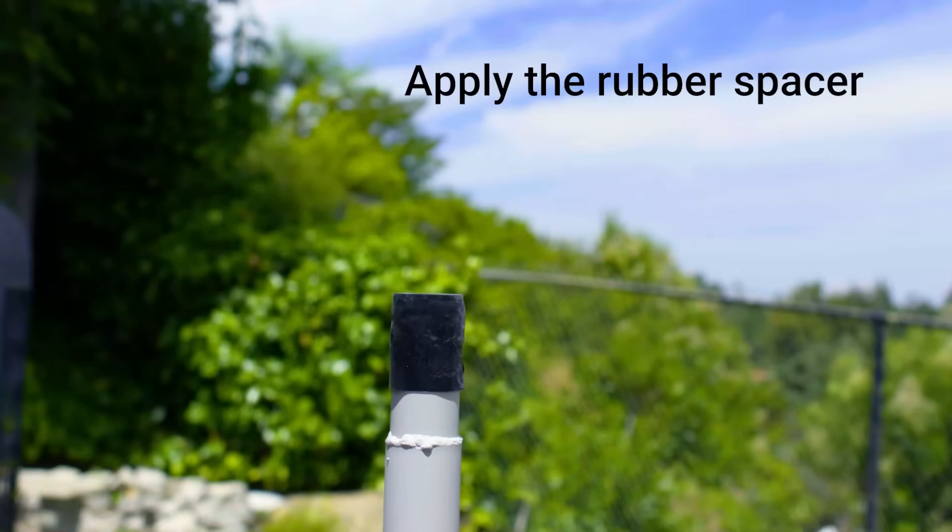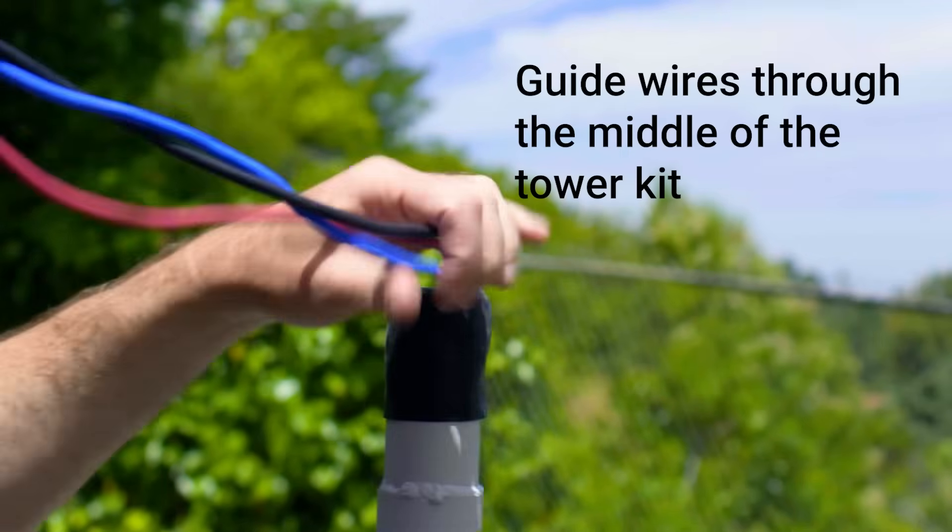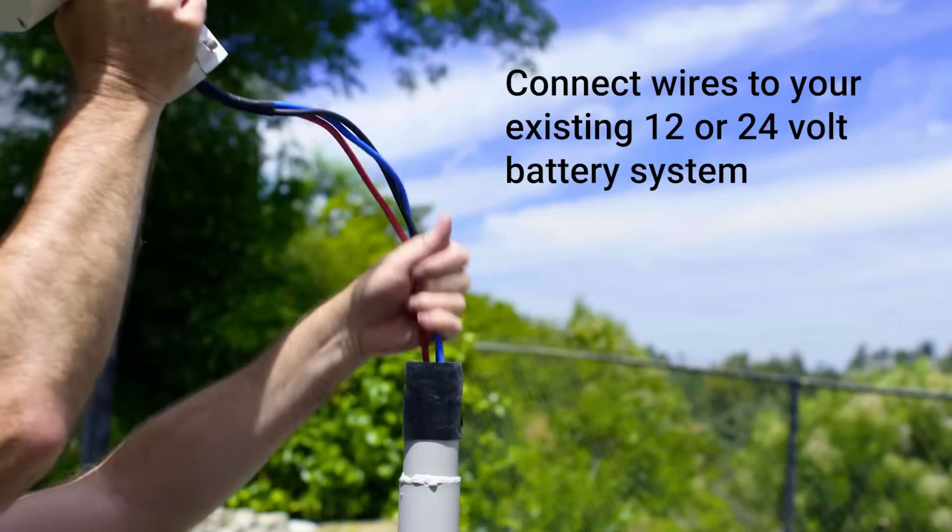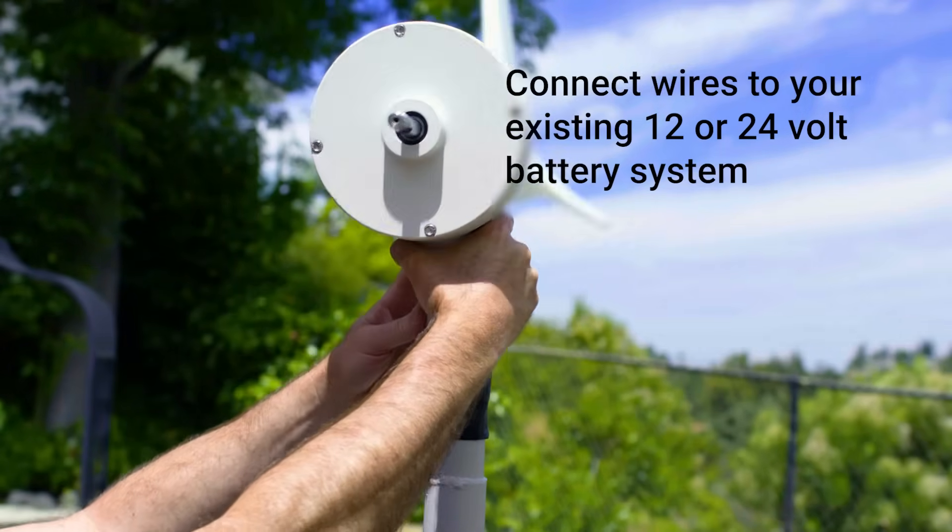Apply the rubber spacer to the tower kit. Guide wires through the middle of the tower kit. Connect wires to your existing 12 or 24-volt battery system or a compatible battery sold on our website.